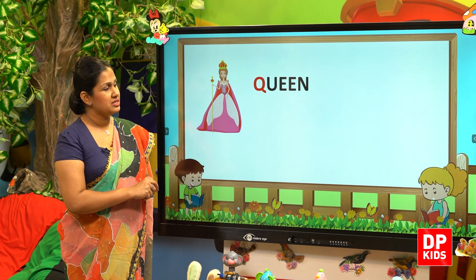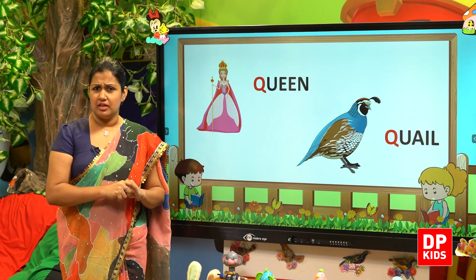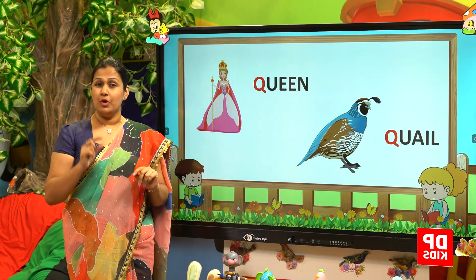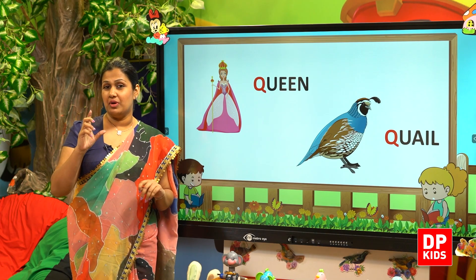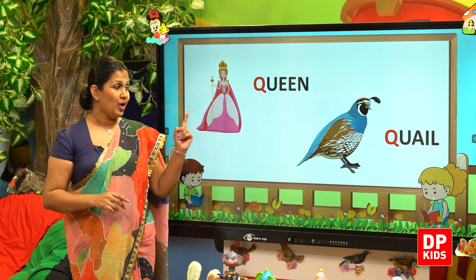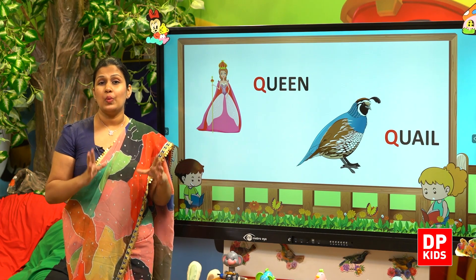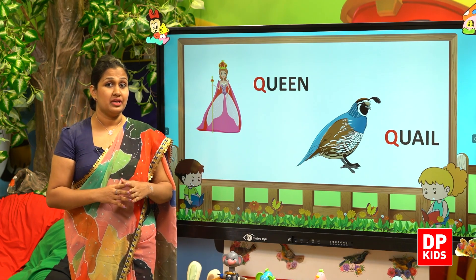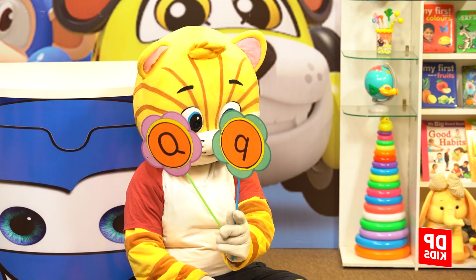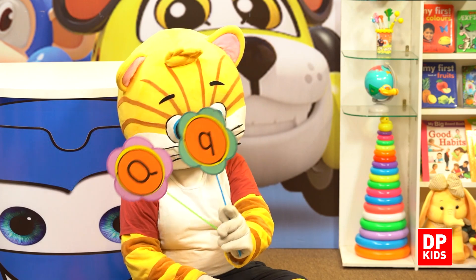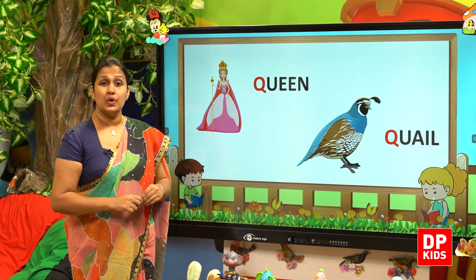Then who comes next? Quail. A quail is a small round bird. That bird is called a quail. Again, 'qu' sound. Kitty has the capital letter and the simple letter. Look at this: quail.